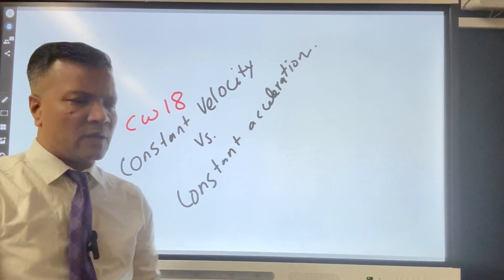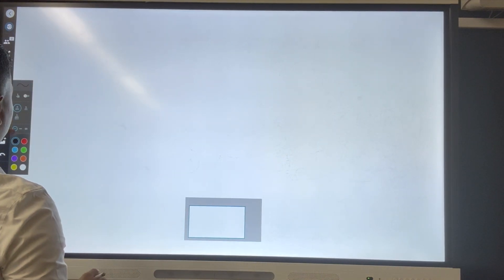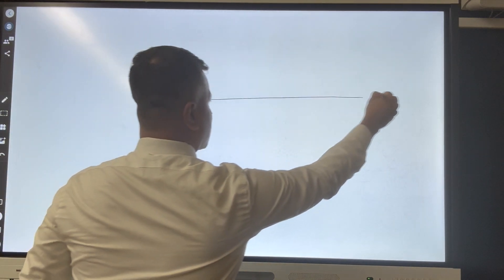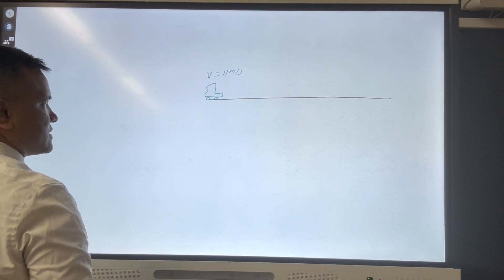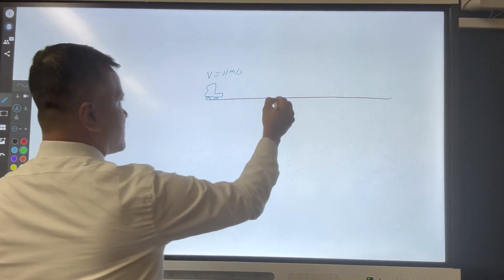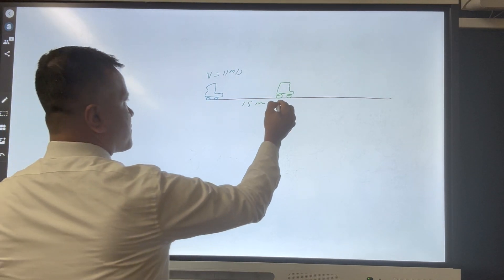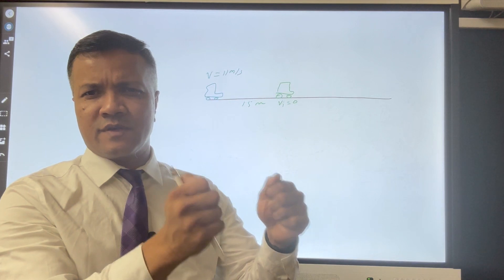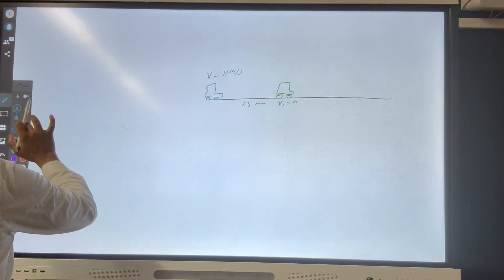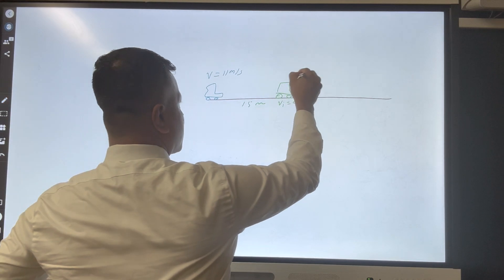We'll distinguish between constant velocity and constant acceleration by solving a problem. The problem involves a road with two cars. One is a blue car that moves with a constant velocity of 11 meters per second. There is a green car which is 15 meters ahead of the blue car, and that green car is at rest because there is a red light — the green car is waiting for the red to turn green.